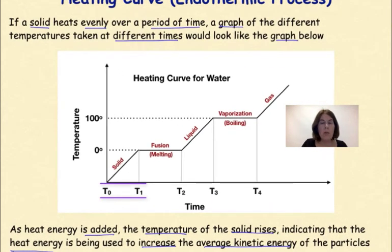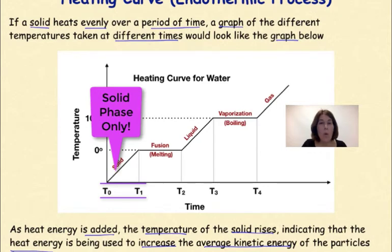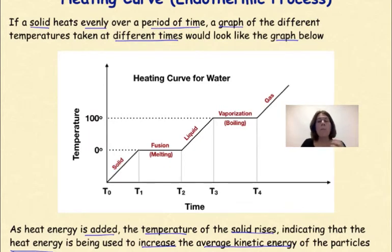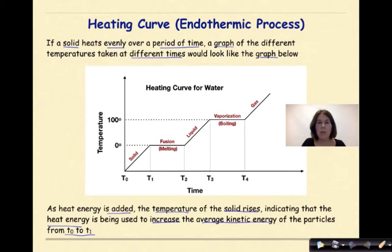From T0 to T1, we are only in the solid phase. Everything is solid. There is no liquid whatsoever. But those particles, as kinetic energy is increasing, they are going to move faster and faster. And if we take the temperature of those particles from T0 to T1, we will see that the temperature is increasing.